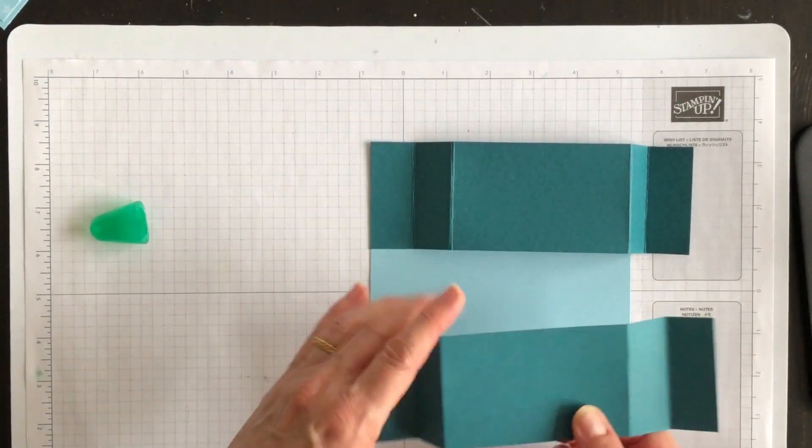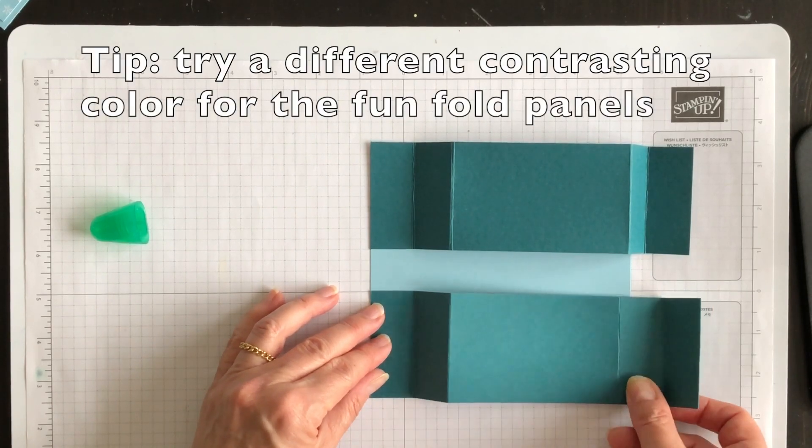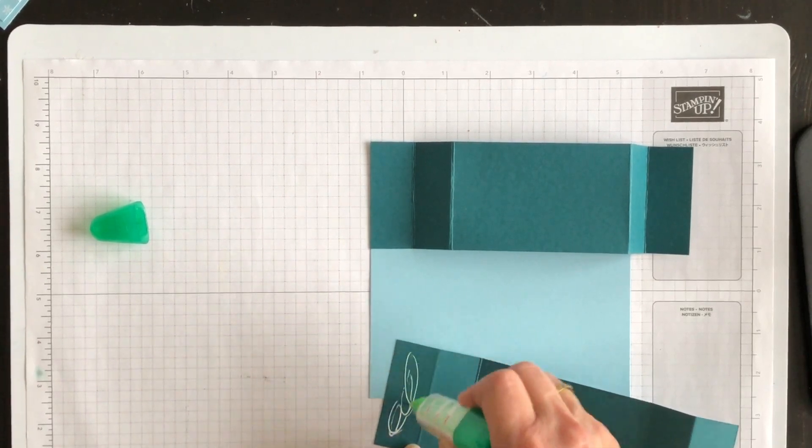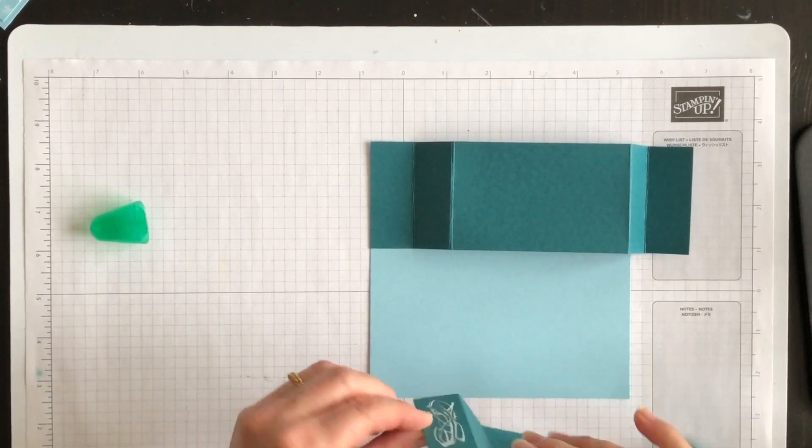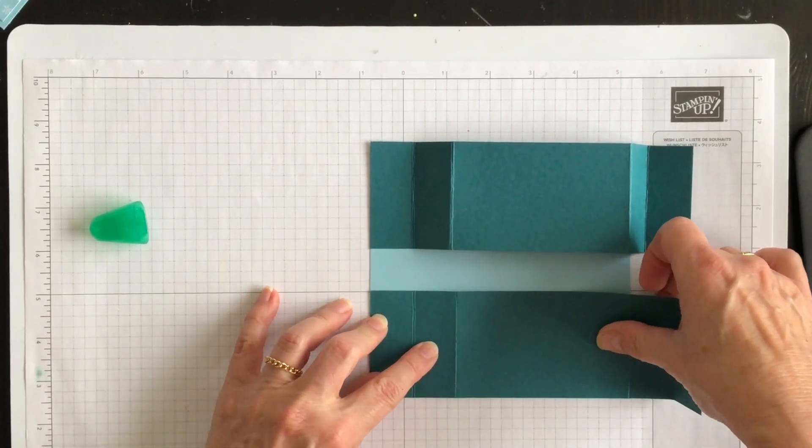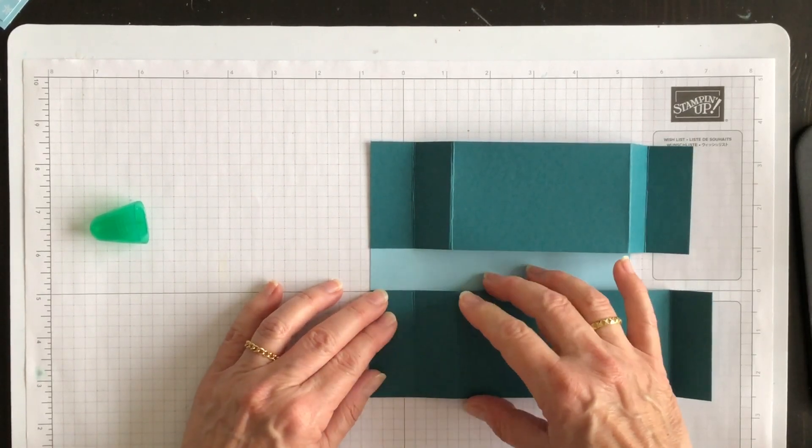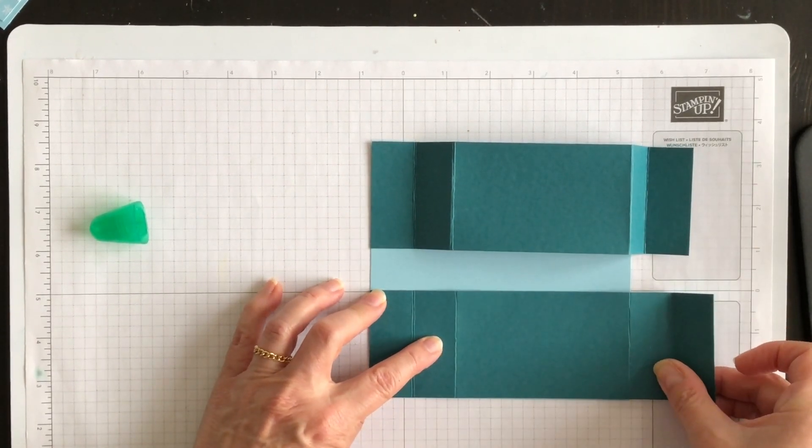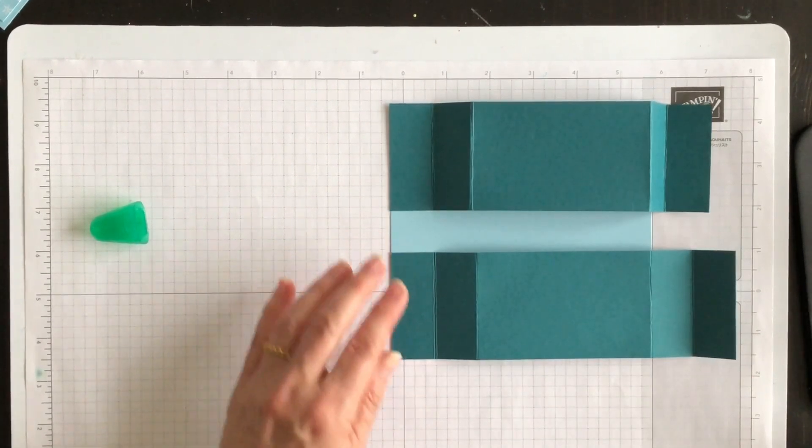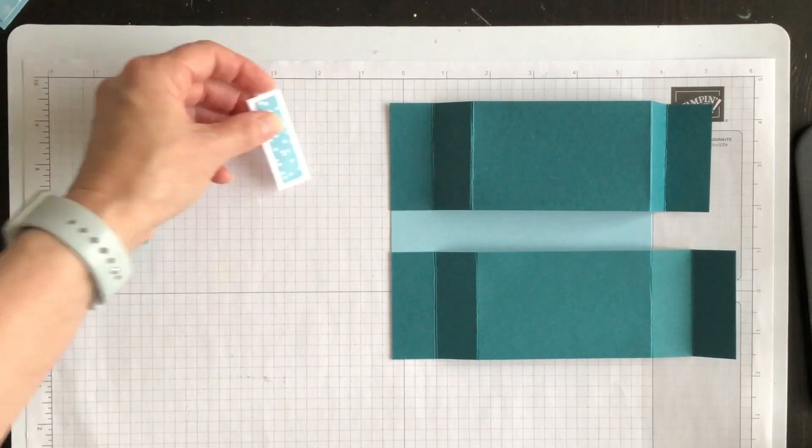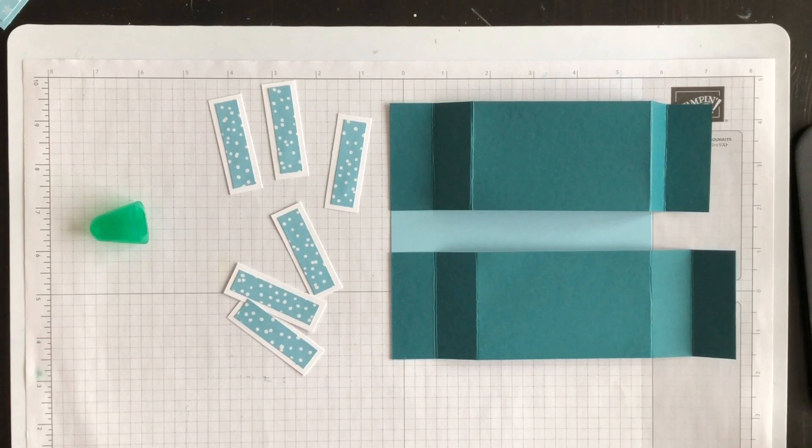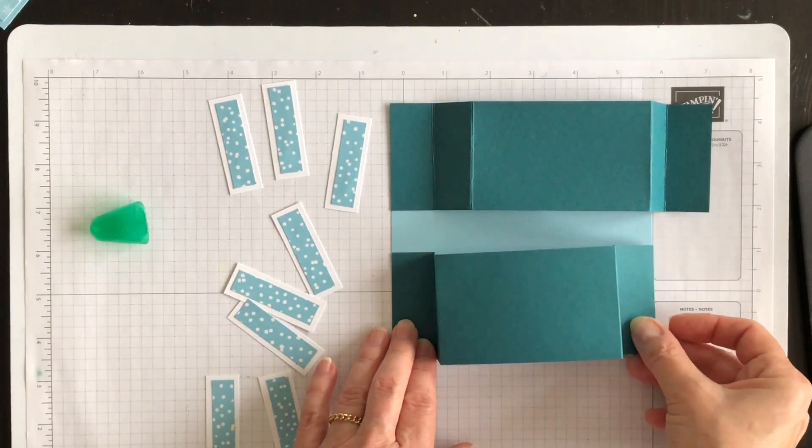What I'm going to do is take the second panel and I'm going to adhere it at the bottom. Now this one you want to really be cautious about lining up. If you want this fun fold card to stand up, then you need to line this up perfectly along the bottom like so.